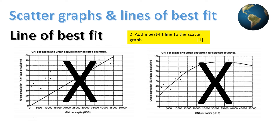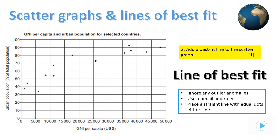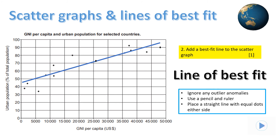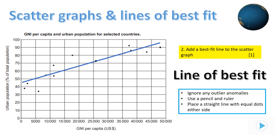To draw the line of best fit correctly, use a ruler and draw a straight line with a pencil following these main guidelines. Firstly, ignore any outliers which are anomalies that don't match the main trends. The best fit line must be drawn to reflect the majority of the data and be balanced, with roughly equal points above and below the line. Pause the show and make sure you can properly draw a line of best fit. This now concludes the show about scatter graphs.